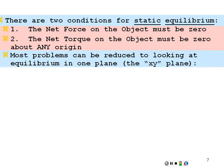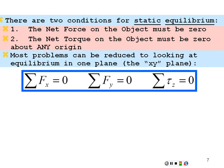Most problems can be reduced to looking only at equilibrium in the x-y plane. Hence the sum of all forces in the x direction equals zero, the sum of all forces in the y direction equals zero — just like what we've done before in dynamics. But now we have an added equation: the sum of torques about an axis in the z direction equals zero. Even though rotation is in the x-y plane, our torques are either positive z or negative z for x-y rotations.